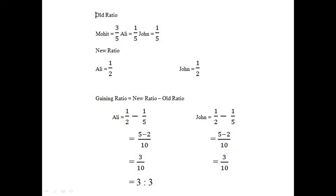In question number 25, Mohit, Ali, and John are partners in the ratio 3:1:1. Mohit is getting retired. Since nothing has been mentioned about the new ratio, as per the previous question, Ali and John will continue with their existing ratio of 1:1 between them. We will continue with the same ratio and find the gaining ratio.